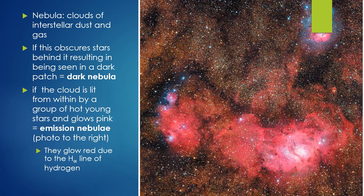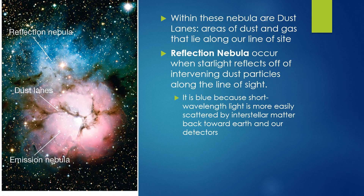Nebulae are clouds of interstellar dust and gas. If a cloud obscures stars behind it, resulting in being seen as a dark patch, it is known as a dark nebula. But if the cloud is lit from within by a group of hot young stars and glows pink, it is known as an emission nebula. They glow red due to the hydrogen alpha line — electrons jumping from the second to the third orbit and emitting a photon. Within these nebulae are dust lanes, which are areas of dust and gas that happen to lie along our line of sight. Reflection nebulae occur when starlight reflects off of an intervening dust particle along the line of sight.